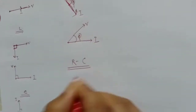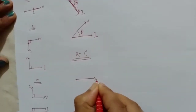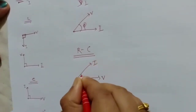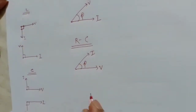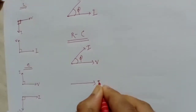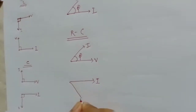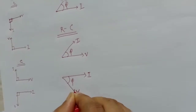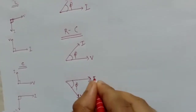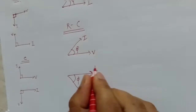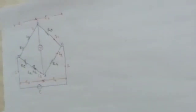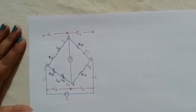For an RC circuit, if voltage is taken as the reference, current leads by angle φ. If current is taken as the reference, voltage lags by angle φ. This is the basic concept before drawing any phasor diagram — with this knowledge you can draw the phasor diagram of any complex circuit.